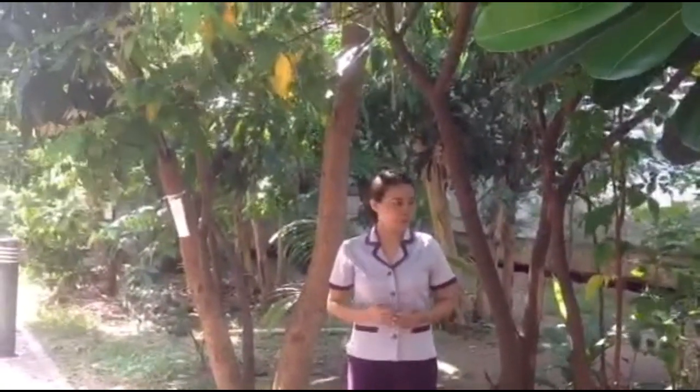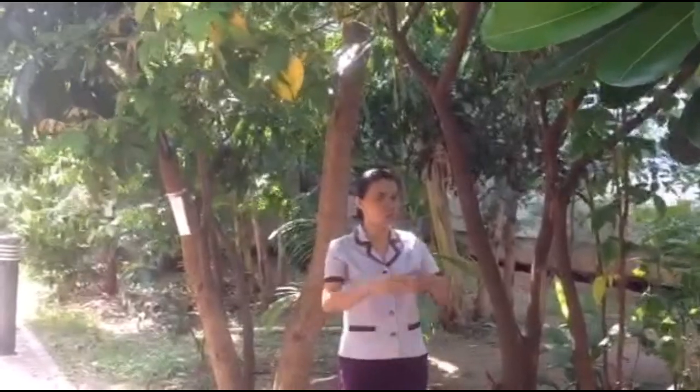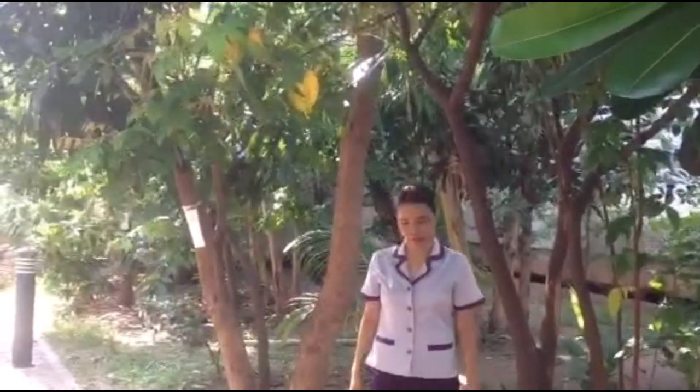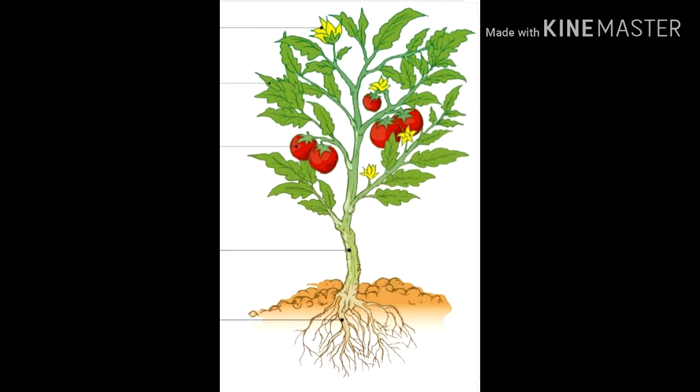Food is carried downward by the transport system. Those are the processes of transporting water, minerals, and food to all parts of the plant. This is a tomato plant. It has five parts that need water, minerals, and food: roots, stem, fruits, leaf, and flower.